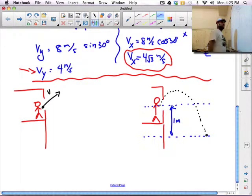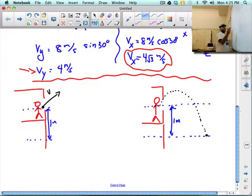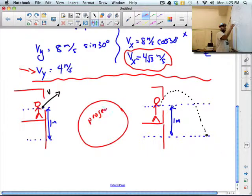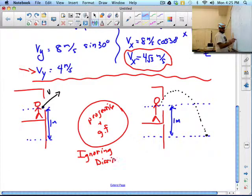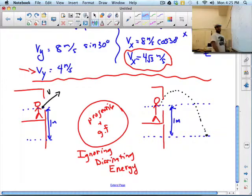We just know that is one meter below where it was when it was launched. So there's the projectile and the system would be the projectile, whatever it is, and the gravity field, and we're ignoring any dissipating energy. That is energy leaving our system through air resistance, which would be the only thing here.